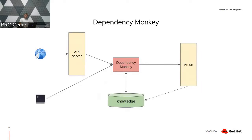Dependency Monkey is a component that lives inside a cluster. It can be run inside a cluster, in which case the interface to trigger a Dependency Monkey run is an API server — you can go directly to an API endpoint, pass in all the parameters, and Dependency Monkey will be run. In the demo, Dependency Monkey will be used locally and run from the command line, but that's just another interface for interacting with it.